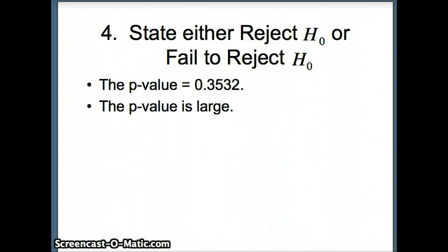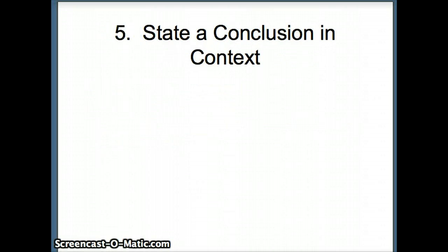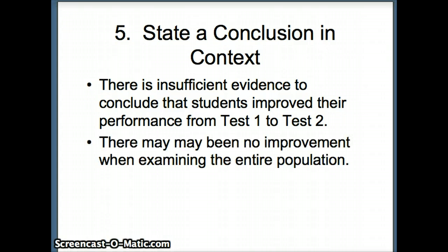Since it's large, our conclusion is fail to reject H-naught. And that's not typically what the researcher wants. If you fail to reject H-naught, you're not going to be able to get the results you're interested in, namely showing the improvement. So we say there is insufficient evidence to conclude that students improved their performance from test one to test two. If we had looked at the entire population, it's possible that our conclusion would have been no improvement, that the average for the first test and the average for the second test, the increase would have been negligible.